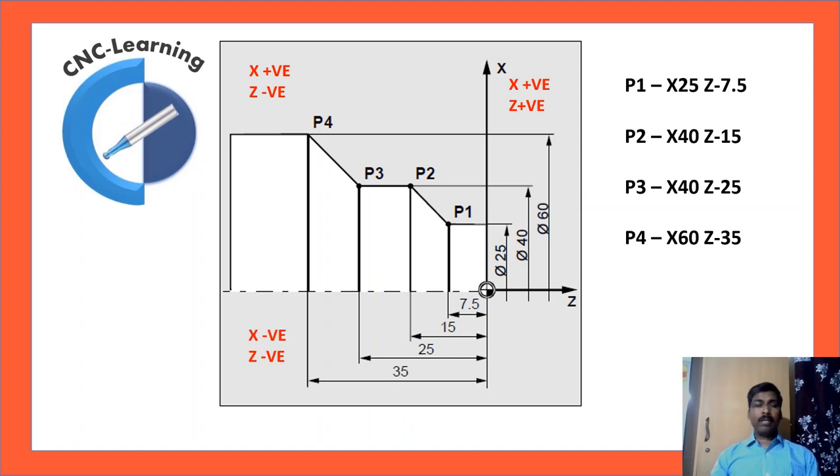So third quadrant will be X negative and Z negative. Fourth quadrant will be X negative, Z positive. So most of the cases, this will be rare. Most of the cases, it will be X positive, Z negative.